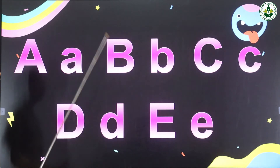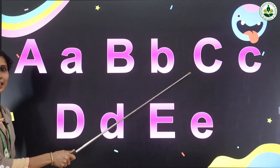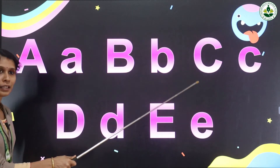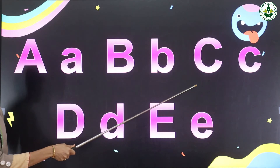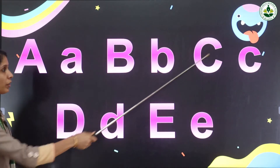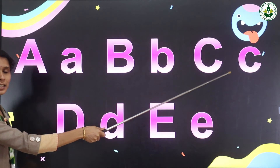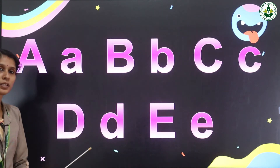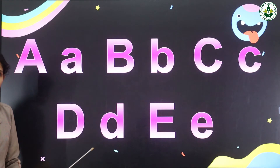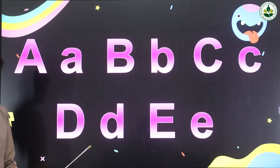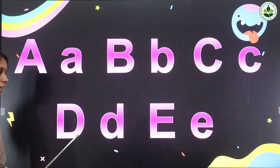Then what is the phonic sound of letter B? Very good, it is B. What is the phonic sound of letter B? Then which letter comes after B? It is letter C. Can you say which letter is this? Capital C. And this one? Small letter C. Then can you say the phonic sound of letter C? Very good, it is K. What is the phonic sound of letter C? K.